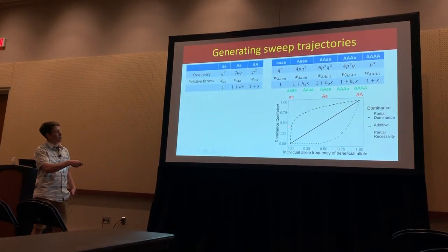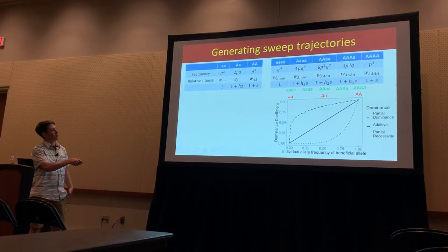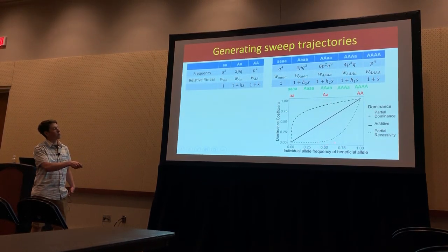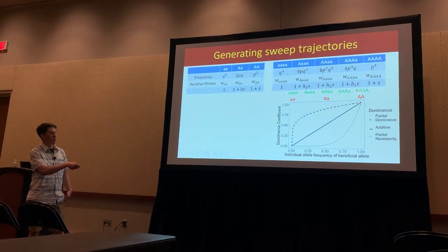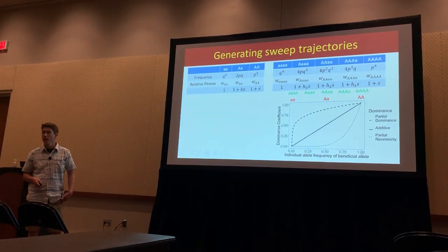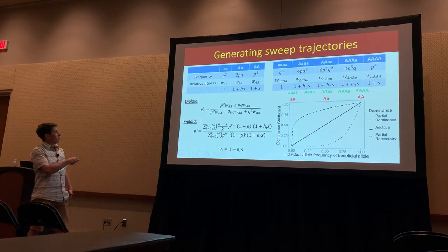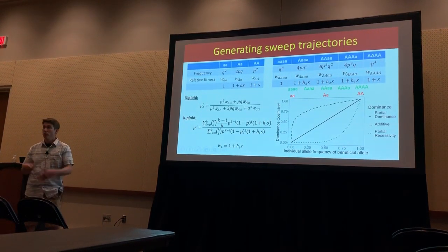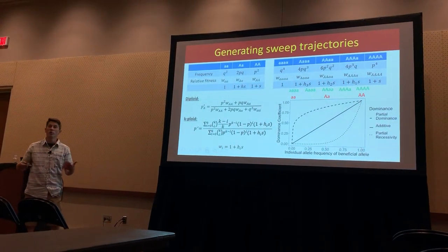The way we simplify is to say that the dominance coefficient follows a relationship based on how many mutant alleles you have in your genotype — in other words, the allele frequency within the individual. That gives us the appropriate dominance coefficient under three dominance scenarios, and we can generalize this diploid form for the following-generation frequency to an arbitrary ploidy level.